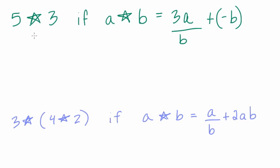So this is one right here. And we want to find an answer, 5 star 3, whatever that means. But fortunately, they tell you. Right here, they're saying figure this out. If a star b equals this, 3 times a over b plus negative b, what do they mean? Well, they just mean that a is the first number in front of the star and b represents the second number.